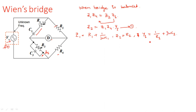If we had written Z3 instead of Y3, we would need to write R3 in parallel with 1/(jωC3), which becomes complex when multiplied in Equation 1. That is why it is better to use admittance for the parallel arm. Z4 is simply R4. Now substitute all values into Equation 1.